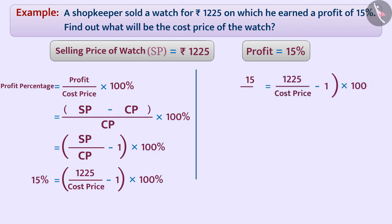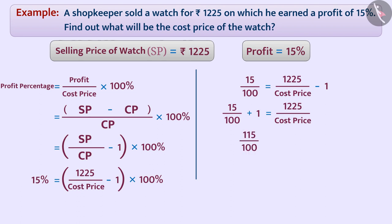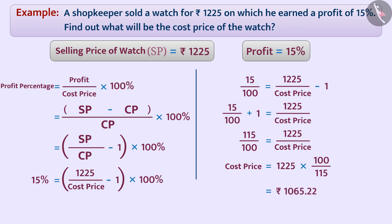That is, 15 ÷ 100 = 1225 ÷ CP − 1. So, 15 ÷ 100 + 1 = 1225 ÷ CP, that is 115 ÷ 100 = 1225 ÷ CP. Therefore, cost price = 1225 × 100 ÷ 115 = Rs 1065.22. Therefore, the cost price of the watch is Rs 1065.22.